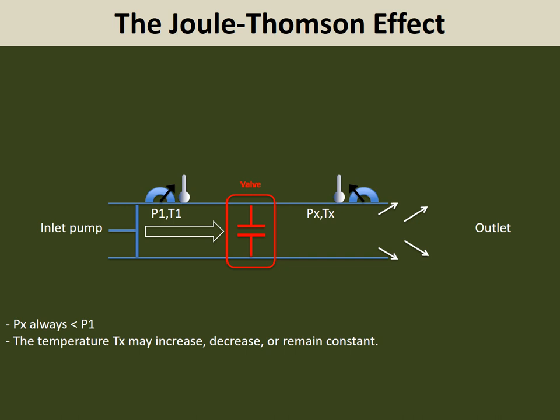If you have a liquid that is condensed at high pressure on one side and a valve at the other end, when you open the valve, the pressure downstream is lower than the upstream pressure, which causes flow to happen from left to right. The downstream pressure Px will always be lower than the initial pressure P1, but the final temperature Tx will depend on two countering effects that are taking place.